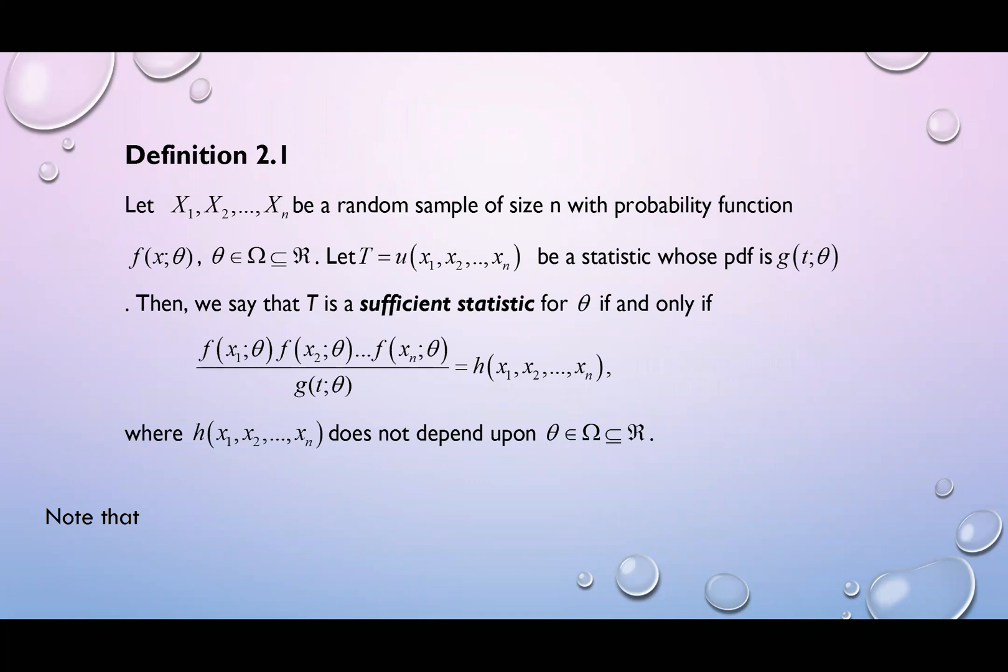Let us refer to definition 2.1. Let X1, X2, Xn be a random sample of size n with probability function f(x; theta). Let T be a statistic whose PDF is g(t; theta). T here is a sufficient statistic for theta if and only if we have the conditional distribution f(x1, x2, xn | t) where t is the sufficient statistic, is equal to the joint PDF f(x1; theta), f(x2; theta), f(xn; theta) divided by the sufficient statistic or divided by PDF of the sufficient statistic. This will result in H(x1, x2, xn). If your H does not depend upon theta, then we call T as sufficient statistic.